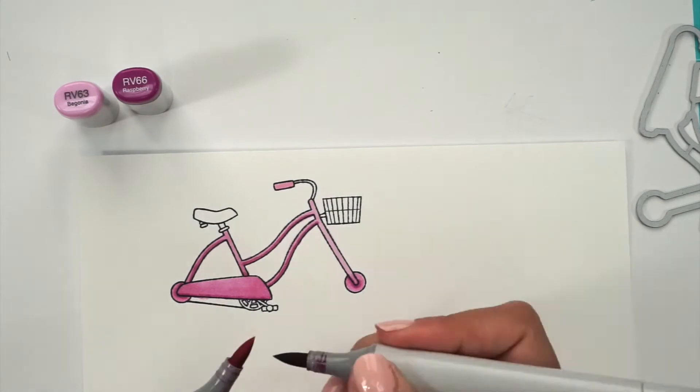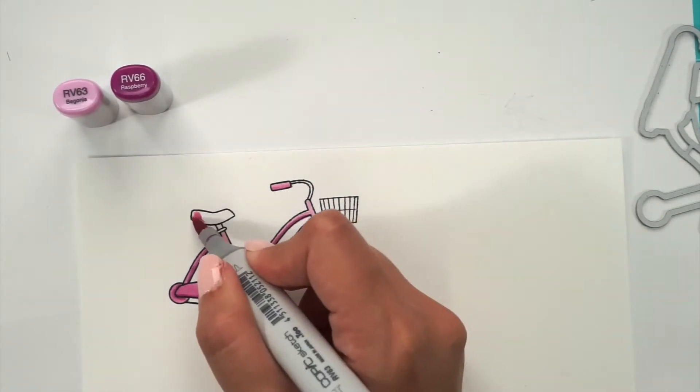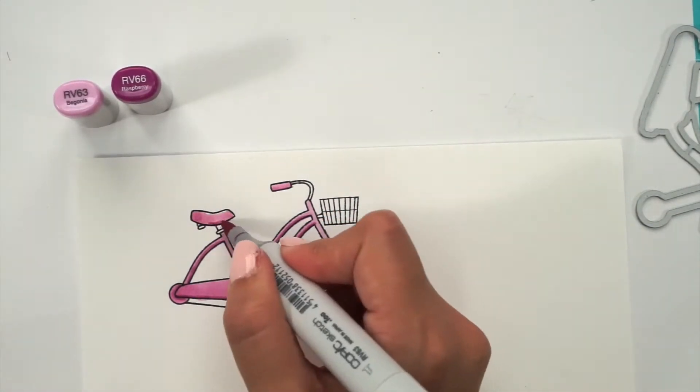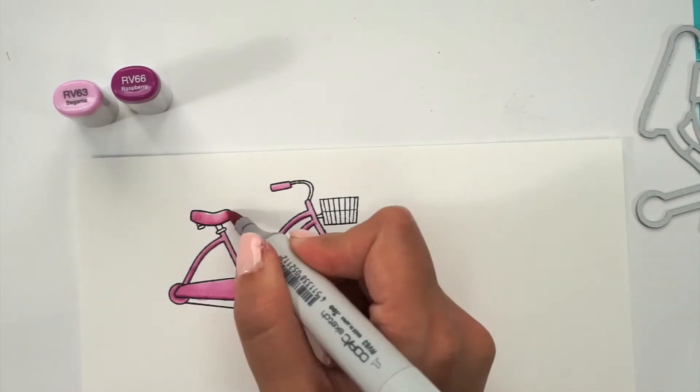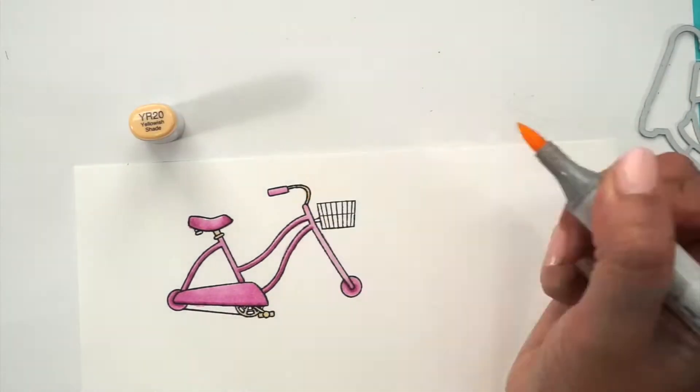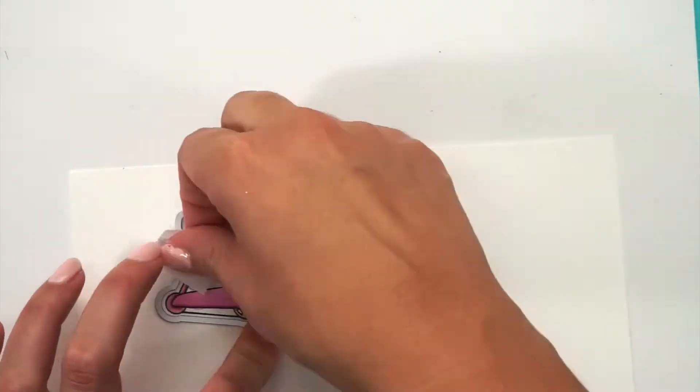Another thing that we love about this set is that you can color. You can just use your Copic markers, your watercolors, or your pencils. And it's so much fun. You can just color and coordinate everything with the animated stamps.